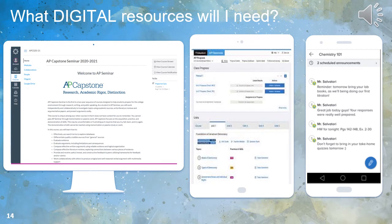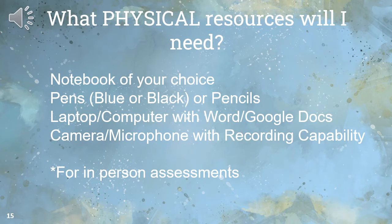What digital resources will you need? These are generally the same as APES. You'll need access to the AP Capstone Seminar Canvas course, access to the AP Capstone Seminar AP Classroom, and Remind, where I will send you information and you can contact me with questions. Physically, it's your option if you would like a notebook — it may be helpful to keep notes and reflections. You'll need pens, blue or black only, or pencils only for in-person assessments, a laptop or computer with access to Microsoft Word or Google Docs, and a camera with a microphone with recording capability.